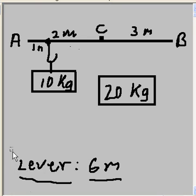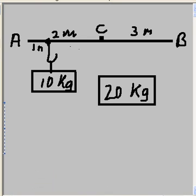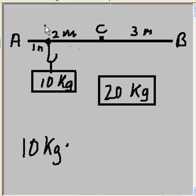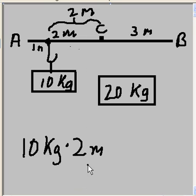Well there's a way to do this. What you do is this: do a little bit of math. You take the weight, 10 kilograms, and you multiply it times the distance from the point where it's hanging to the center point C. That's two meters. So 10 kilograms times two meters gives you what? 10 times 2 is 20.